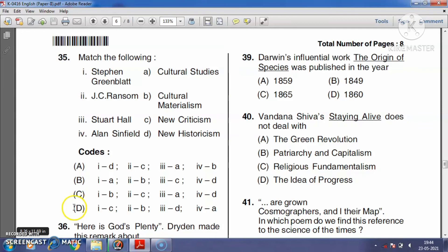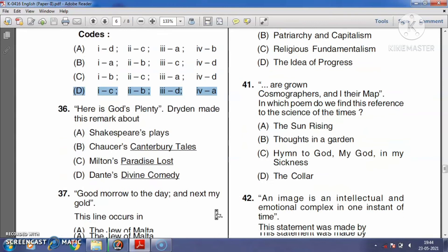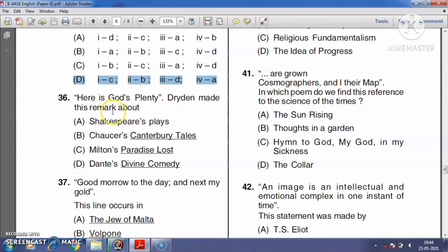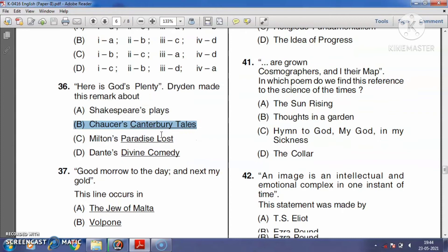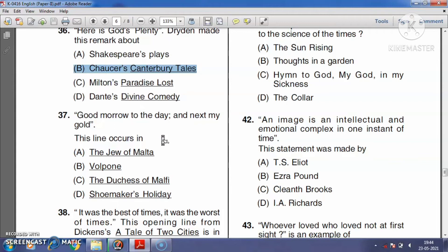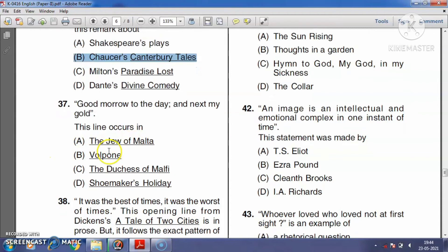Question number thirty-six: 'Here is God's plenty.' Dryden made this remark about Shakespeare's plays, Chaucer's Canterbury Tales, Milton's Paradise Lost, or Dante's Divine Comedy? The right answer is option B, Chaucer's Canterbury Tales. Question number thirty-seven: 'Good morrow to the day so next my gold.' This line occurs in The Jew of Malta, Volpone, The Duchess of Malfi, or The Shoemaker's Holiday? The right answer is option B, Volpone. Volpone is a comedy by Ben Jonson, published in 1606. The play is about money and the power of its influence on people.